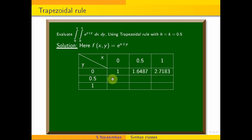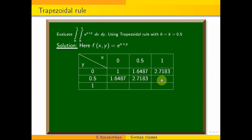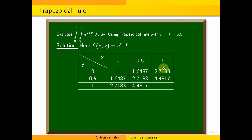Now the table of values: x=0, y=0: e^0 = 1. x=0, y=0.5: e^0.5 = 1.6487. x=0.5, y=0.5: e^1 = 2.7183. x=0.5, y=0.5: e^1 = 1.7183. x=0.5, y=1: e^1.5 = 4.4817. x=0, y=1: e^1 = 2.7183. x=0.5, y=1: e^1.5 = 4.4817. x=1, y=1: e^2 = 7.3891.